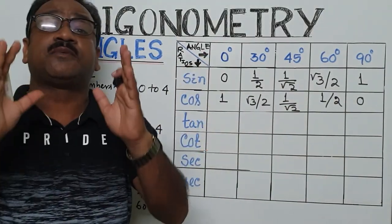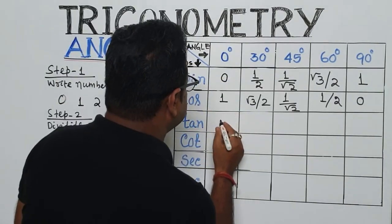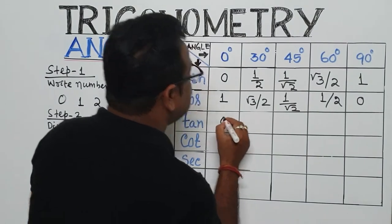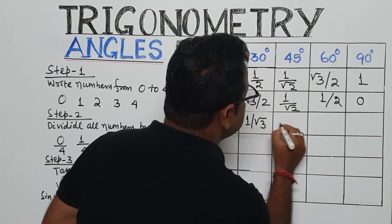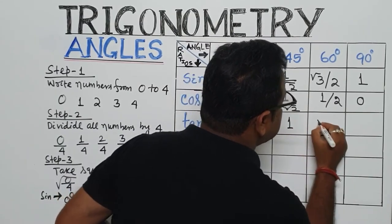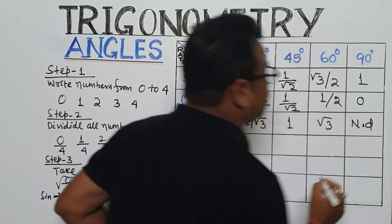Now, we have to find out the angle of tan. We know, tan is sin by cos. So, 0 by 1, that is 0. Now, this is your 1 by root 3. This is your 1, this is your root 3.